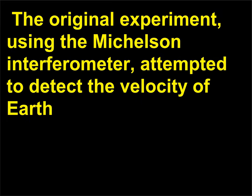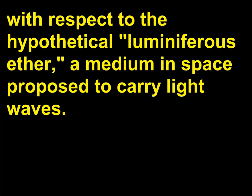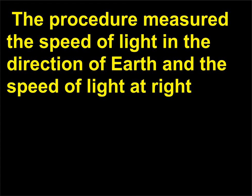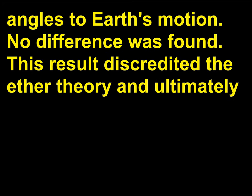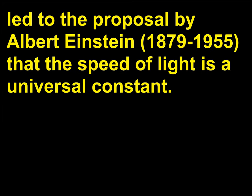The original experiment, using the Michelson interferometer, attempted to detect the velocity of Earth with respect to the hypothetical luminiferous ether, a medium in space proposed to carry light waves. The procedure measured the speed of light in the direction of Earth's motion and the speed of light at right angles to Earth's motion. No difference was found. This result discredited the ether theory and ultimately led to the proposal by Albert Einstein (1879–1955) that the speed of light is a universal constant.